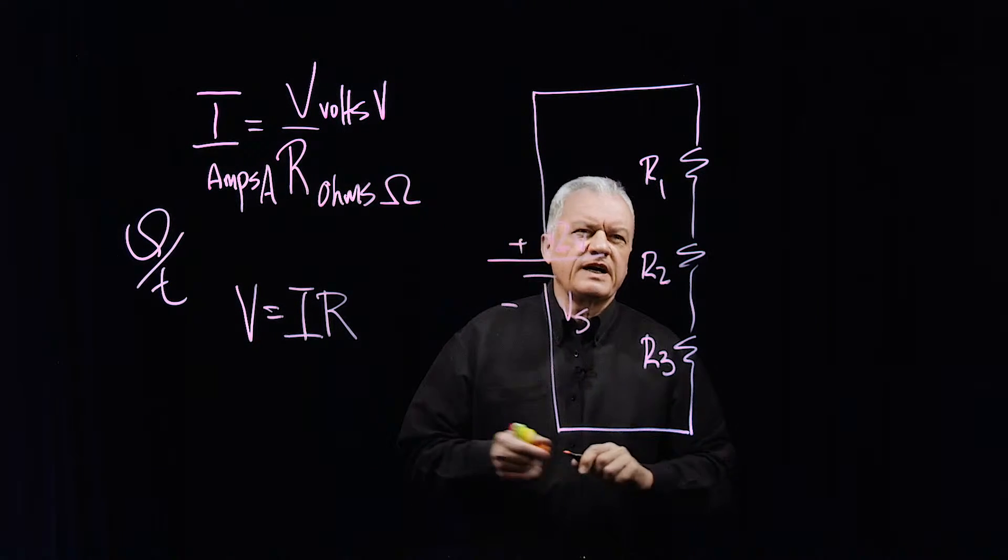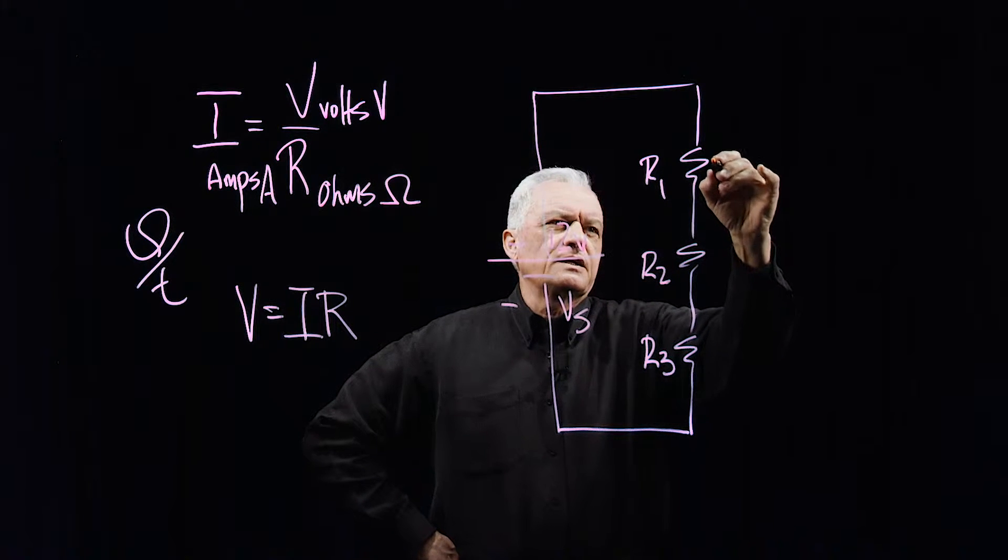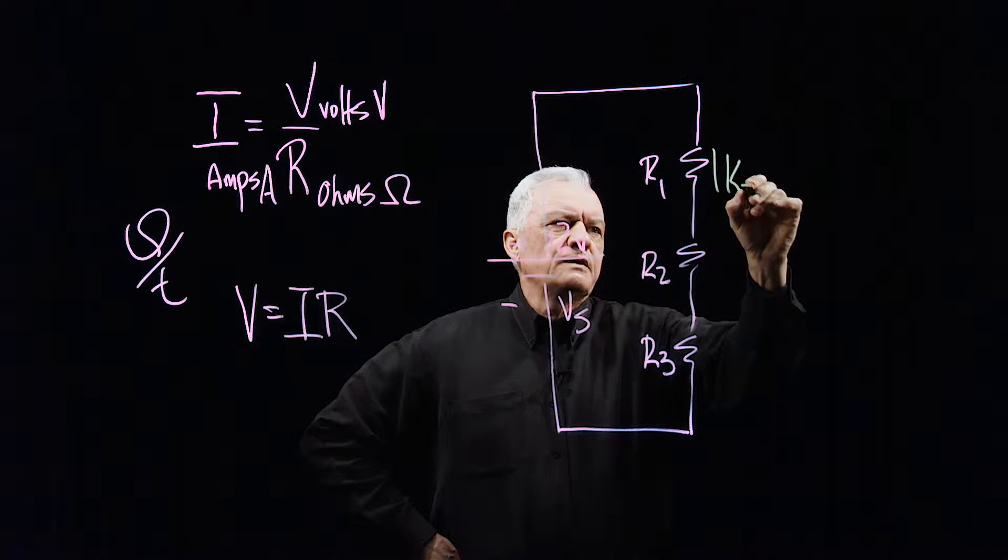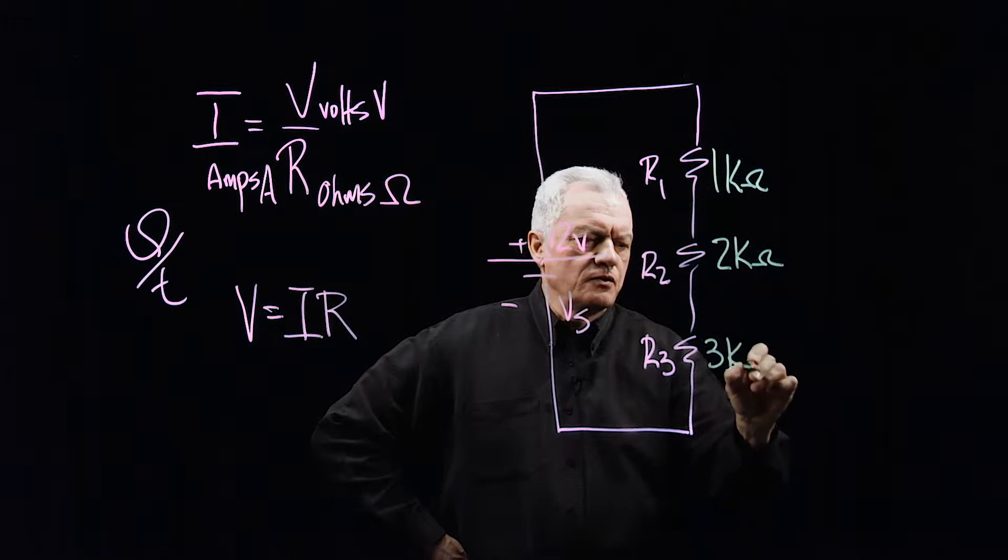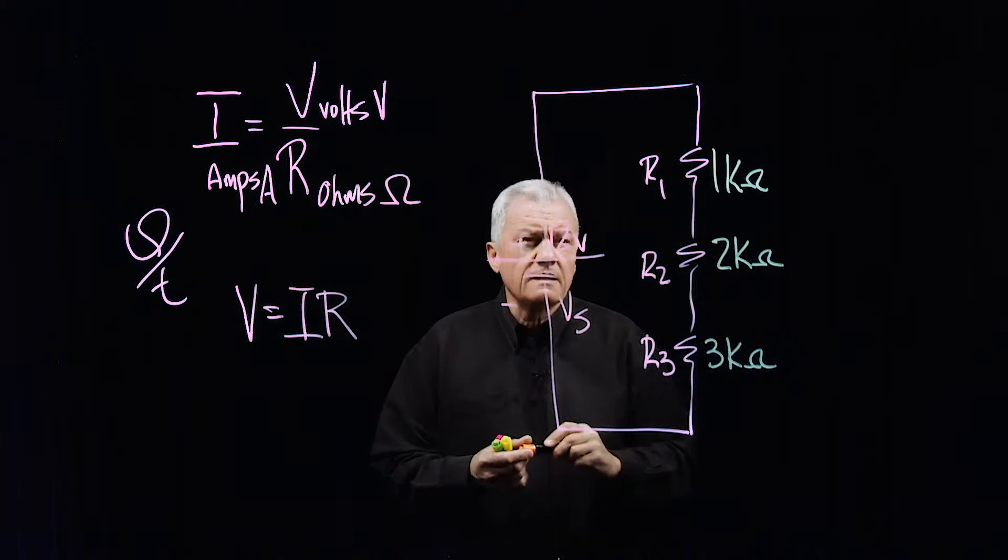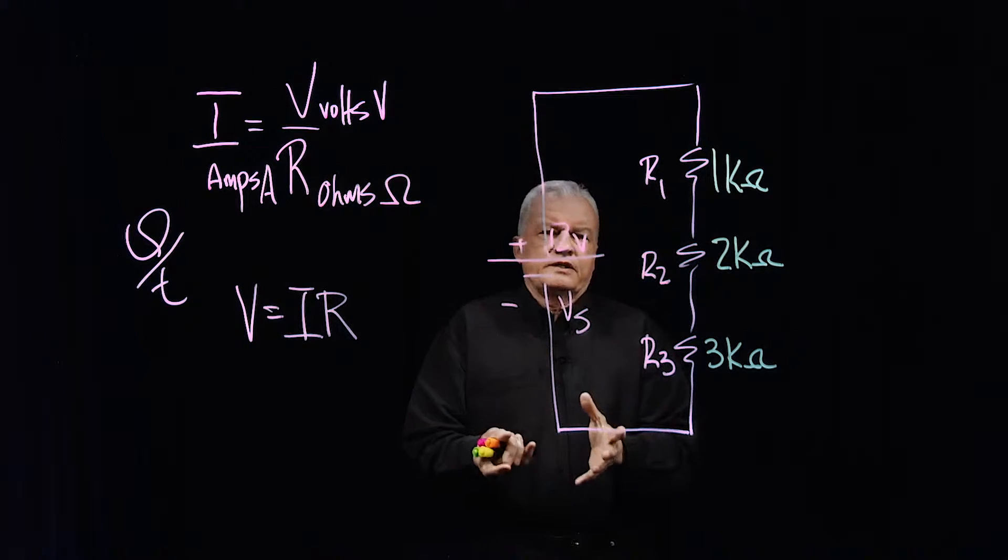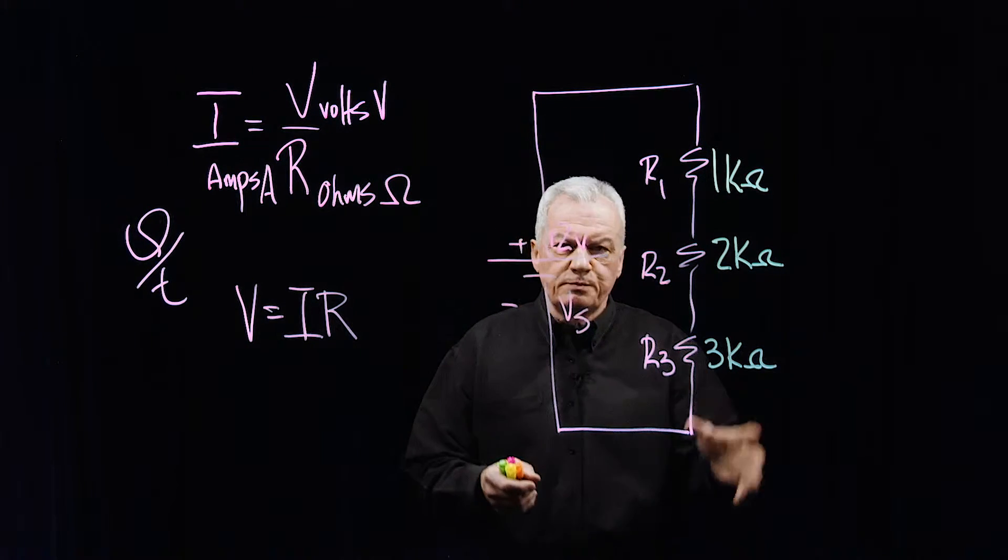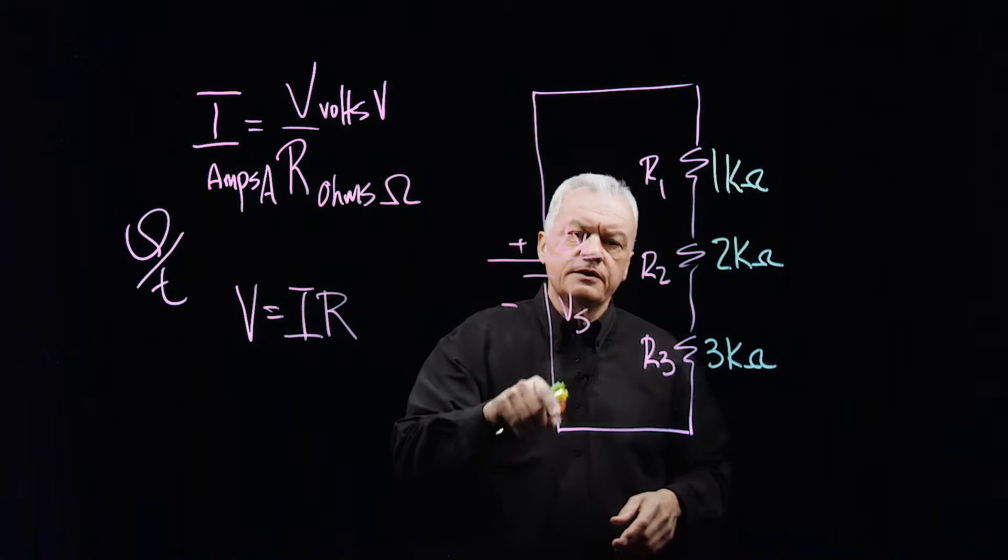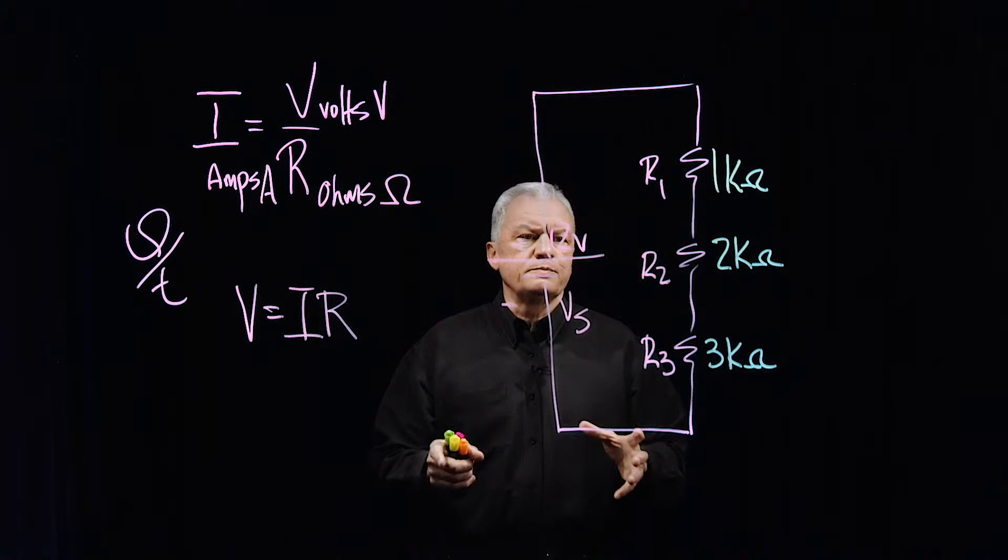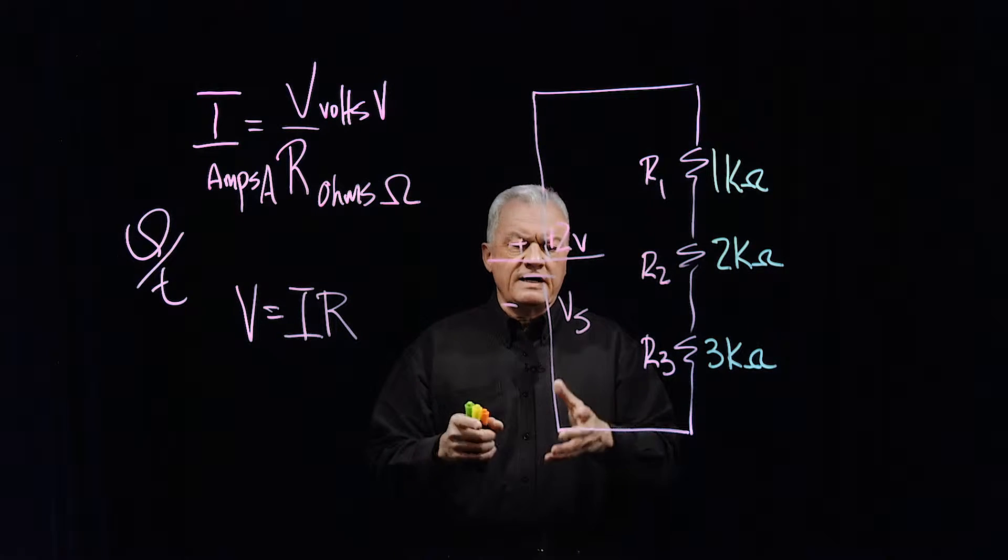Let's put some values in for the resistance. Let's just keep this simple: 1,000 ohms, 2,000 ohms, and 3,000 ohms. Now if we look at this circuit, the first thing we notice is the loop is closed. When the loop is closed, current can flow. Current cannot flow in an open loop. It needs to complete a path.